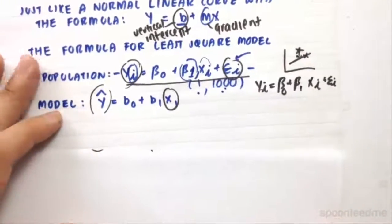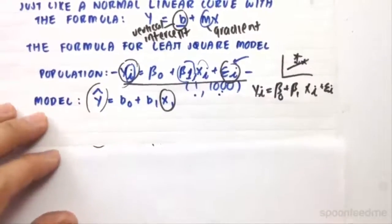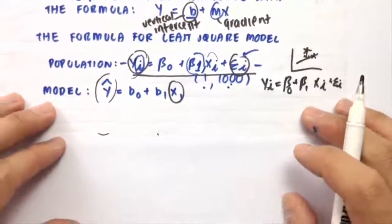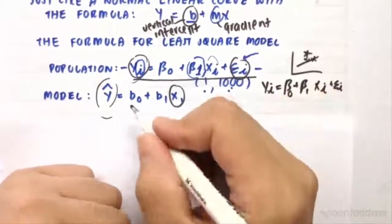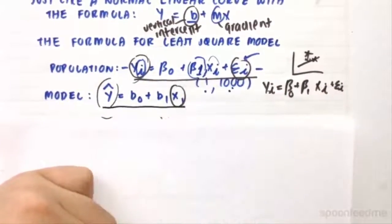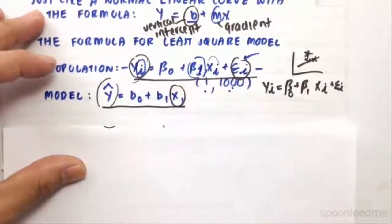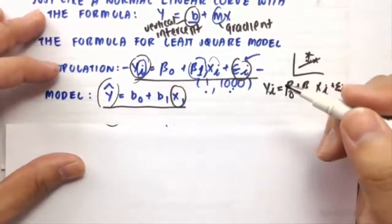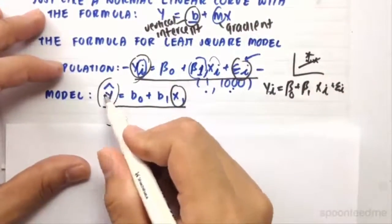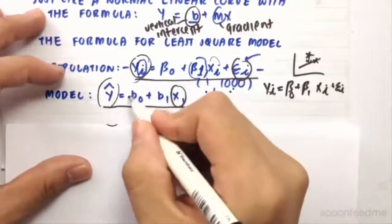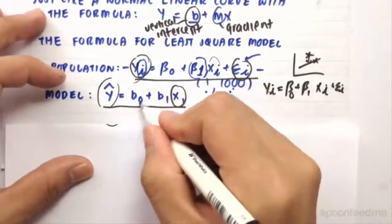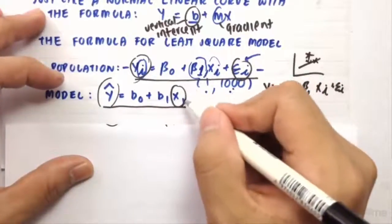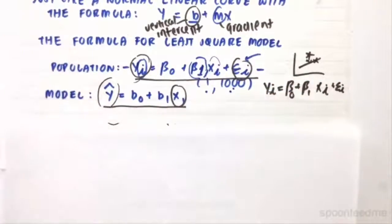And then we do have the model, the OLS or the ordinary least squared model that we have here. So this one's just a line of best fit that tries to predict what this population looks like. So we have y hat, that's what we call the hat, equals to little b 0 plus b with subscript 1, so subscript 0 multiplied by x1, which is the independent variable.